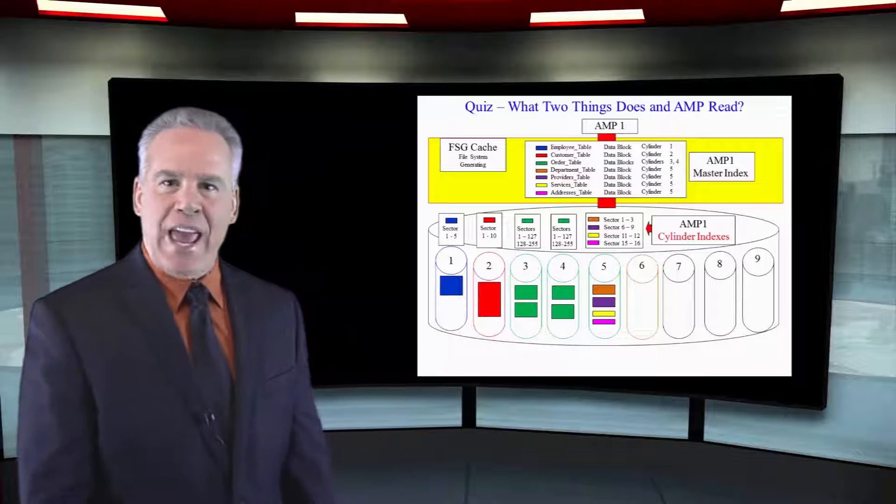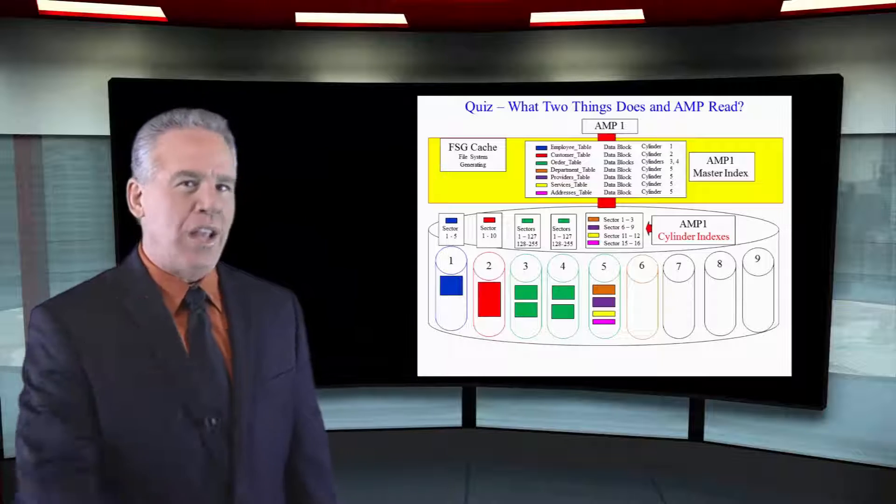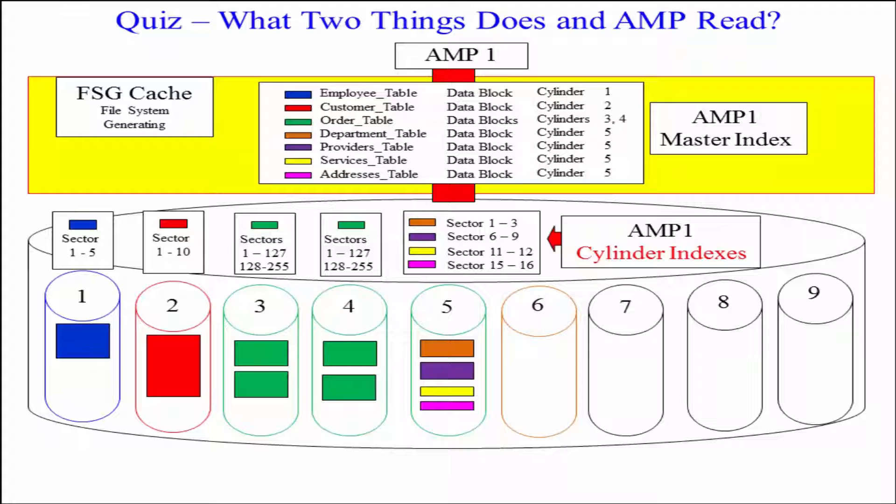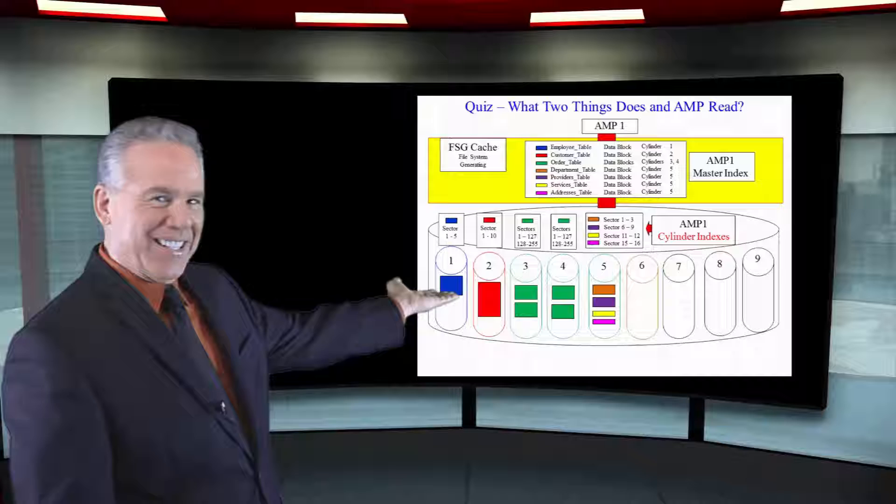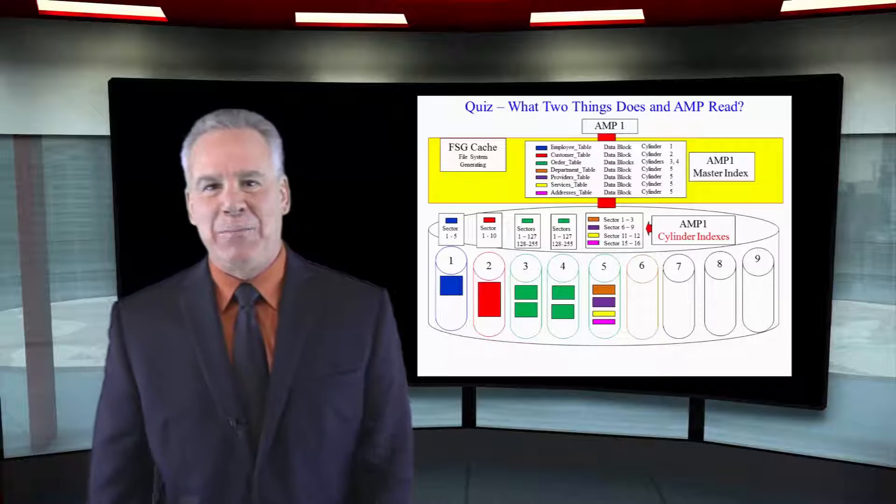Now, this amp's been asked, I want you to bring in the addresses table. It looks in the master index and says, I need cylinder five. It goes to the cylinder index and then says, just give me sectors 15 and 16 and that data block is read.